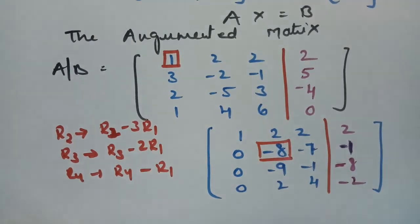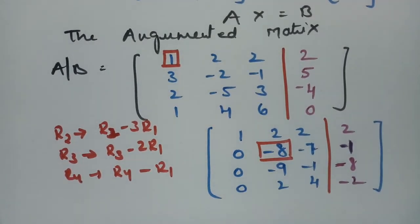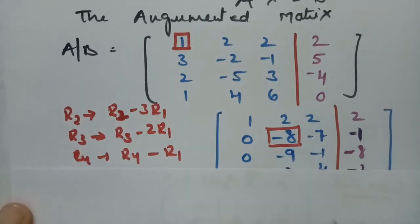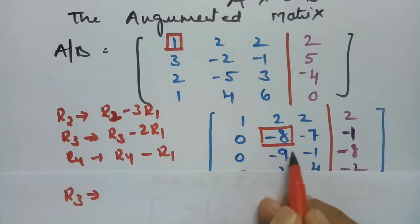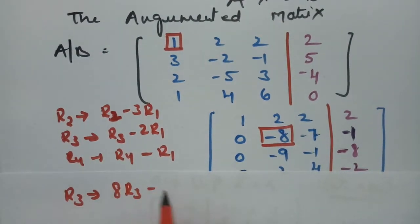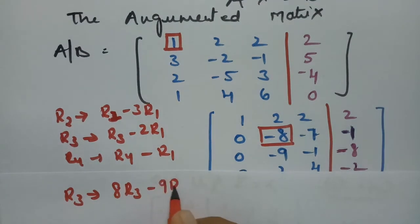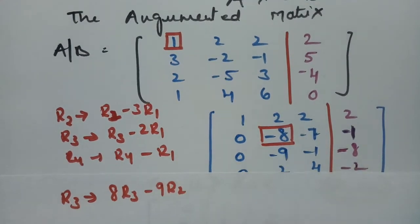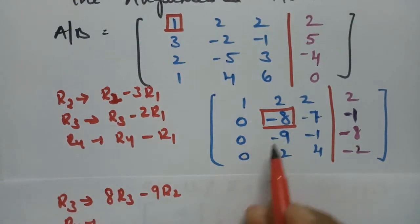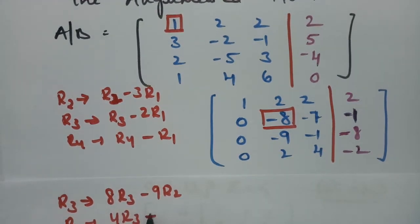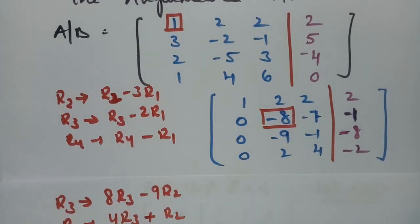Now I am going to use the second diagonal element to make the two entries below it equal to 0. In order to make the R3 entry 0 at that position, R3 will be 8R3 minus 9R2. And to make R4's entry 0 using minus 8, R4 will be 4R4 plus R2. Using these operations on R3 and R4.